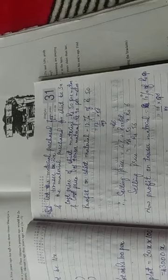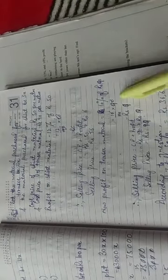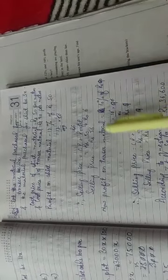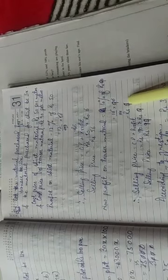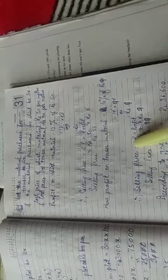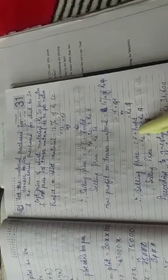Now the profit on trouser material is 10% of the selling price, 10% of rupees 90, so it is coming out to be 9. And the selling price will be cost price plus profit, that means 90 plus 9. The selling price is 99.